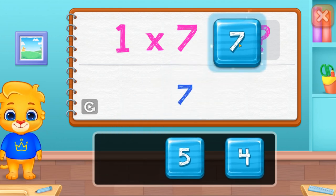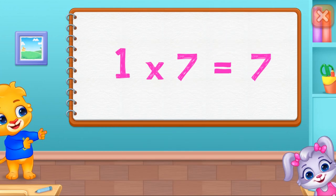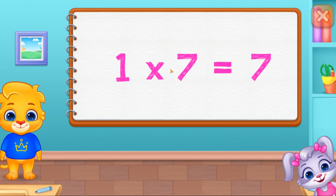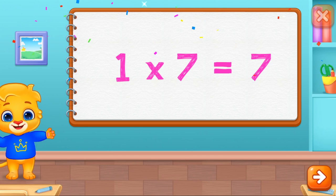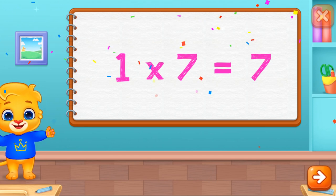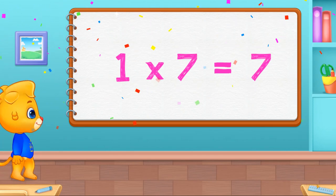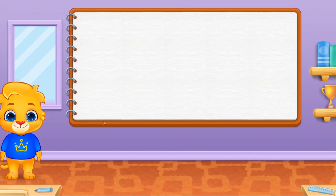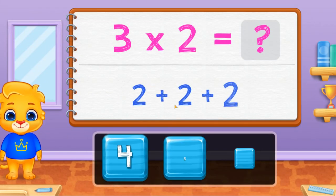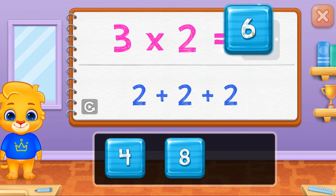Seven. One times seven equals seven. Six.